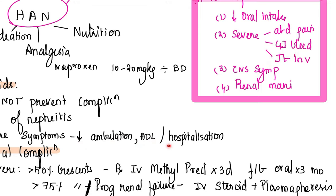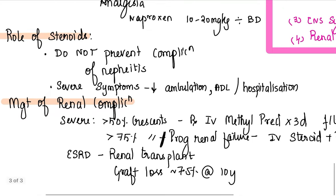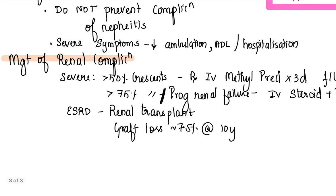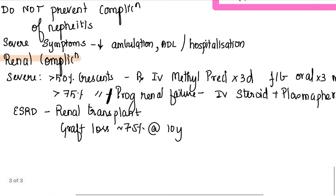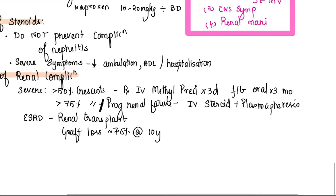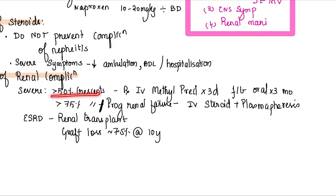How are you going to manage renal complication? Here, depending upon the severity of renal involvement, your treatment is going to vary. Remember, simple: if more than 50 percent crescents are present on your renal biopsy, then you treat with IV steroids for three days followed by oral steroids for three months. If it's more than 75 percent crescent involvement or a progressive renal disease, then you give IV steroids along with plasmapheresis.